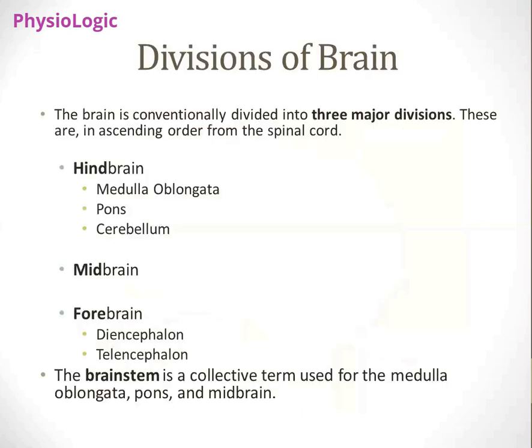The hindbrain has three main components: medulla oblongata, pons, and cerebellum. Studying from inferior to superior, above the spinal cord is the medulla oblongata, and above the medulla oblongata is the pons. Behind these structures is the cerebellum. We are going to look at each of these separately.